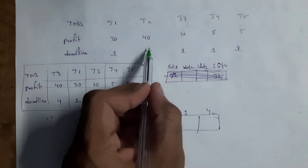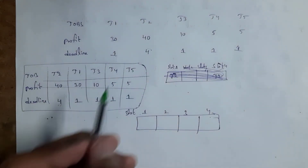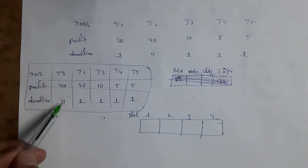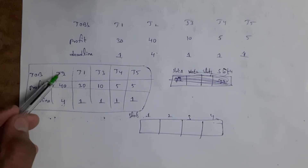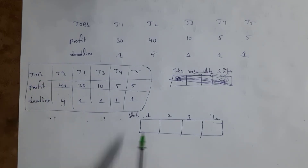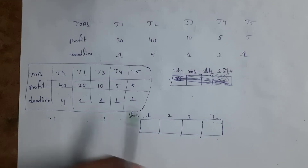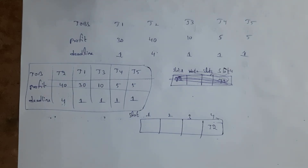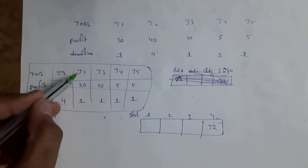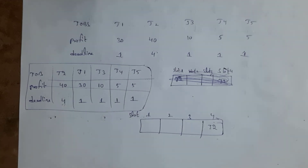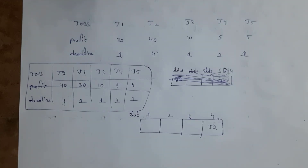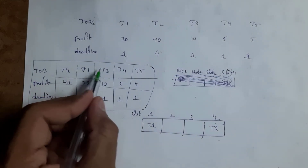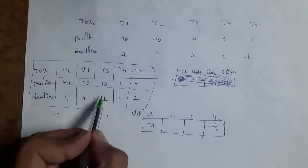The maximum deadline here is 4, so we create 4 slots each of 1 hour. For job J2, the deadline is 4 hours, so all 4 slots are available; I place J2 in Slot 4. For J1, the deadline is 1 hour, so it must go in Slot 1; I place J1 in Slot 1.